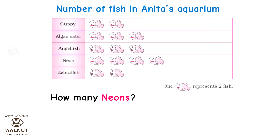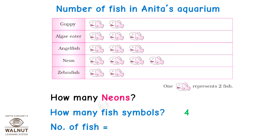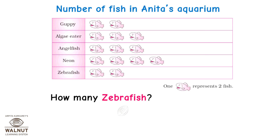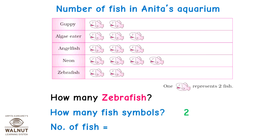How many neons? There are four fish symbols, so the number of fish is equal to 4 into 2 equal to eight. Hence there are eight neons in the aquarium. How many zebra fish? We see two fish symbols.